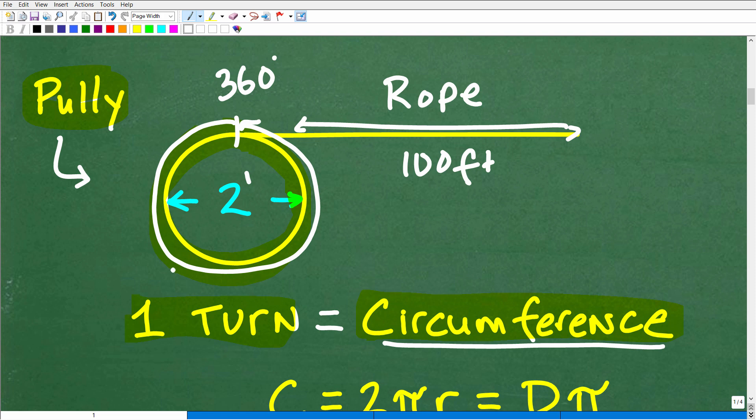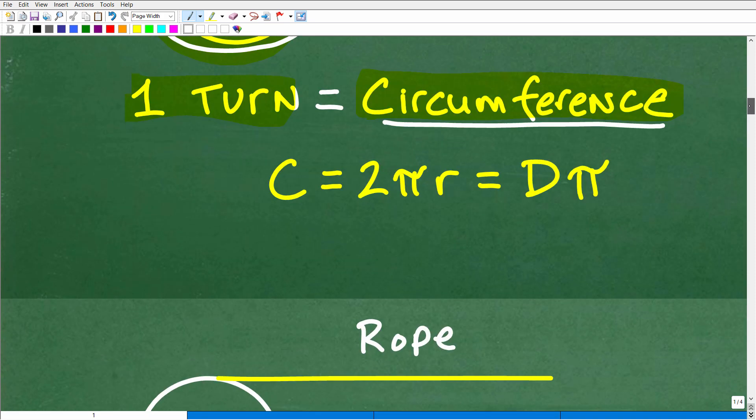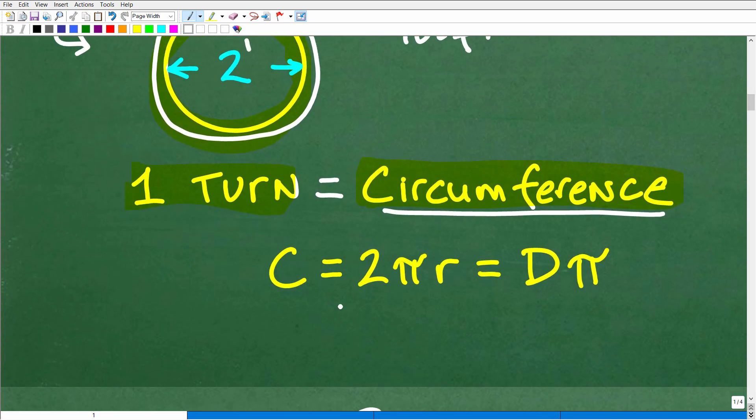Well, again, the circumference is the distance around the circle. So we have a lovely formula for that. So the circumference of a circle is equal to 2 pi r, 2 times pi times the radius, or alternatively, the diameter times pi, because 2 times the radius is the diameter.